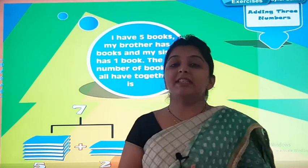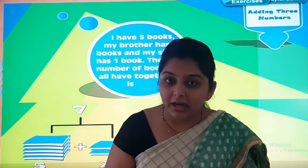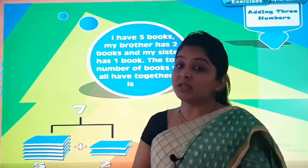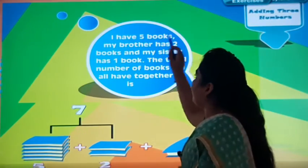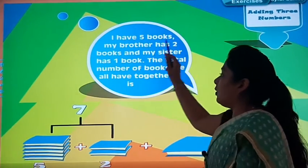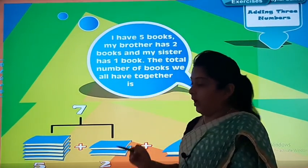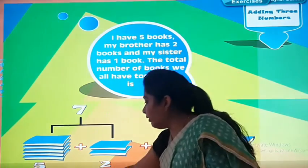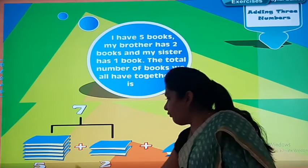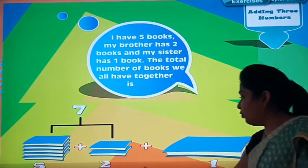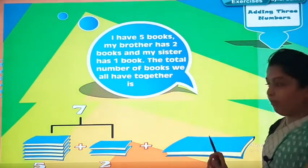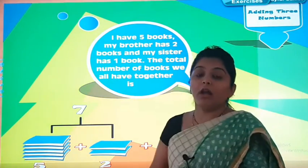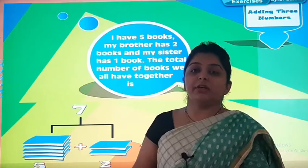Total number means we have to do addition of 3 numbers. Which 3 numbers? 5, 2, and 1. See here it is written: 5 plus 2 plus 1 book.